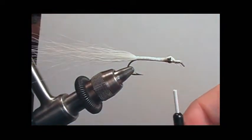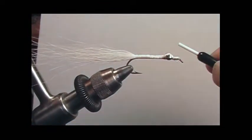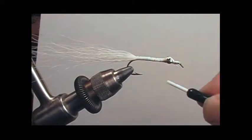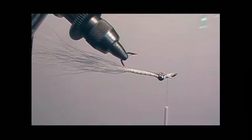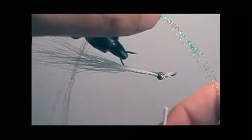Bring the thread back towards the eye of the hook and we will rotate the hook. You could either take it out of the vise and put it in upside down, because this is how the fly is going to swim in the water.